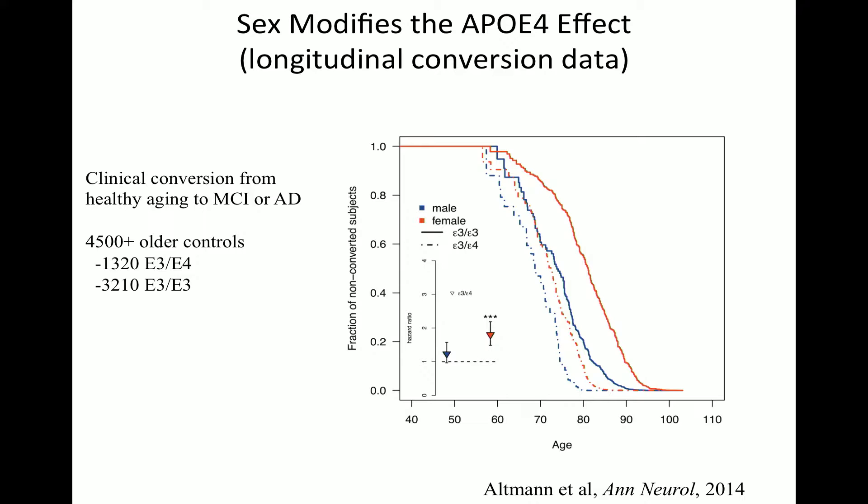Women are in red, men are in blue, dashed lines are E4 carriers, and solid lines are E3 carriers — looking at the effect of one copy of E4. There's a pretty wide spread between the two red lines: the E4 allele in women drives conversion from healthy aging to mild cognitive impairment or Alzheimer's disease much more quickly. The men in blue don't differ very much. The hazard ratio in women is significant at about 1.8-fold increased risk of conversion. In men, there was no significant effect of one E4 allele on converting from healthy aging to MCI or Alzheimer's.